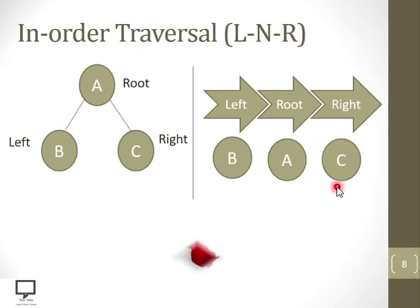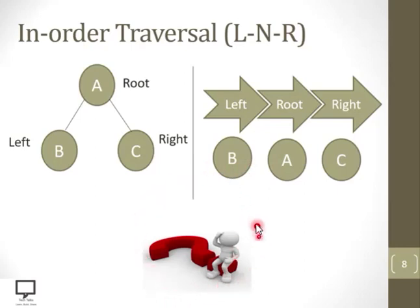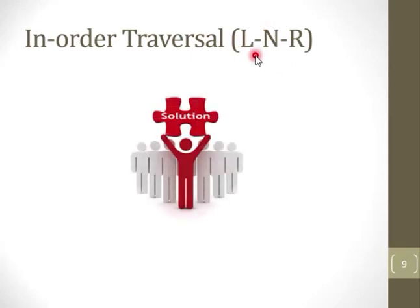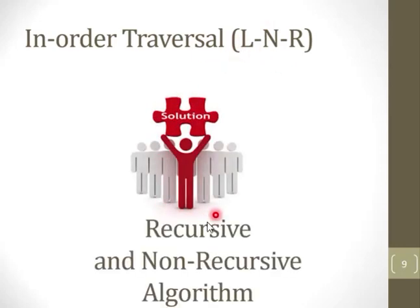How do we follow all these steps? The solution is recursive and non-recursive traversal algorithms. I am explaining solved examples of in-order binary tree traversal — how to perform this traversal.